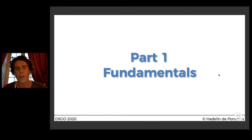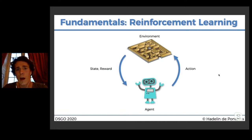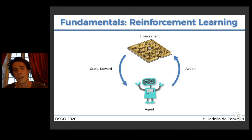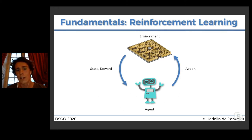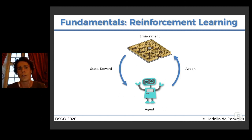Part one: fundamentals. The first fundamental is how a reinforcement learning environment works. You have the environment — for example, a maze where an agent, meaning a little robot, has to find the exit or goal inside the maze. Iteration by iteration, it will play a certain action within a certain state. As soon as it plays the action, it will receive a reward. Just as we try to educate a dog or a child, we give a positive reward if the agent is getting closer to the goal, and a negative reward if it's getting further or goes into a trap.